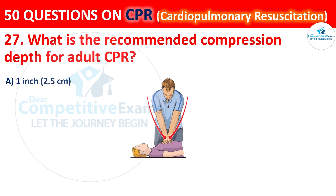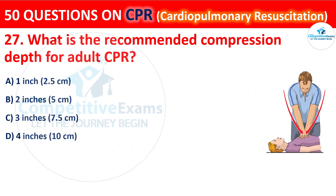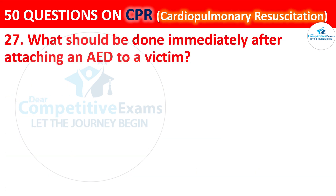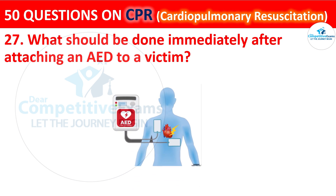Question 27: What is the recommended compression depth for adult CPR? The options are: 1 inch (2.5 cm), 2 inches (5 cm), 3 inches (7.5 cm), or 4 inches (10 cm). The correct answer is B — 2 inches (5 cm). The recommended compression depth for adult CPR is approximately 2 inches (5 cm).